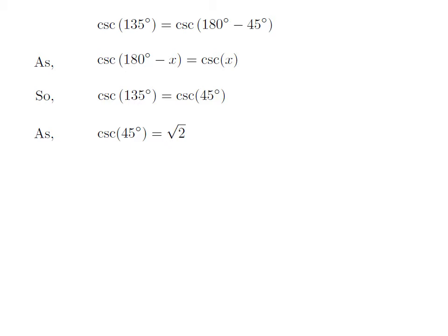We know the value of cosecant of 45 degree is equal to square root of 2. So, cosecant of 135 degree is equal to square root of 2.